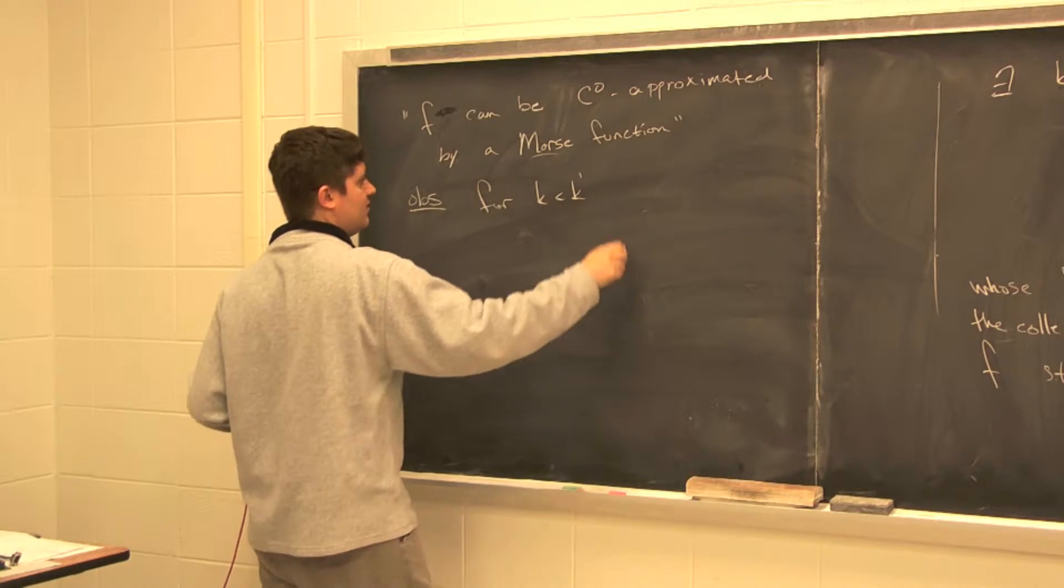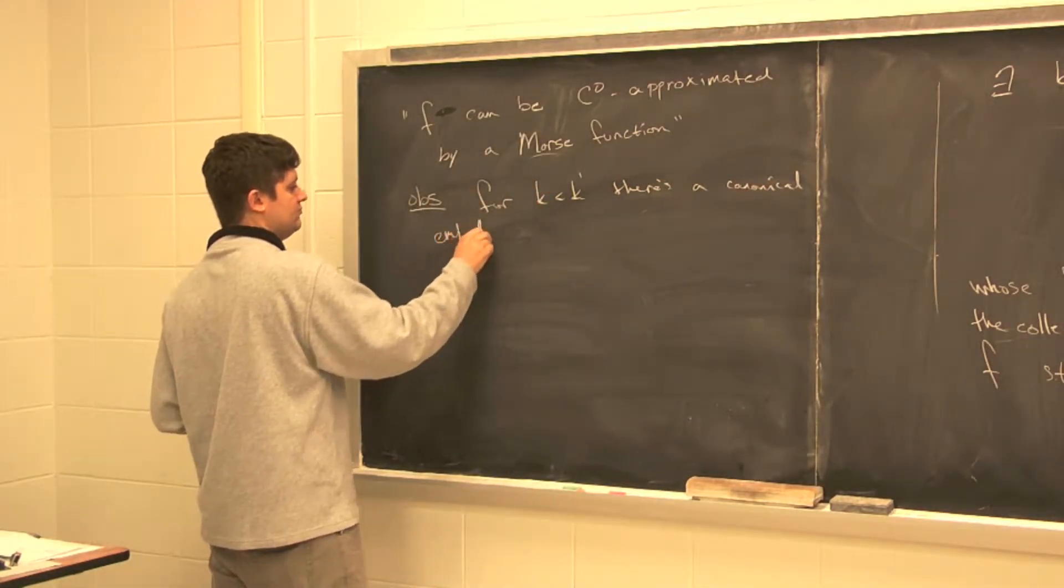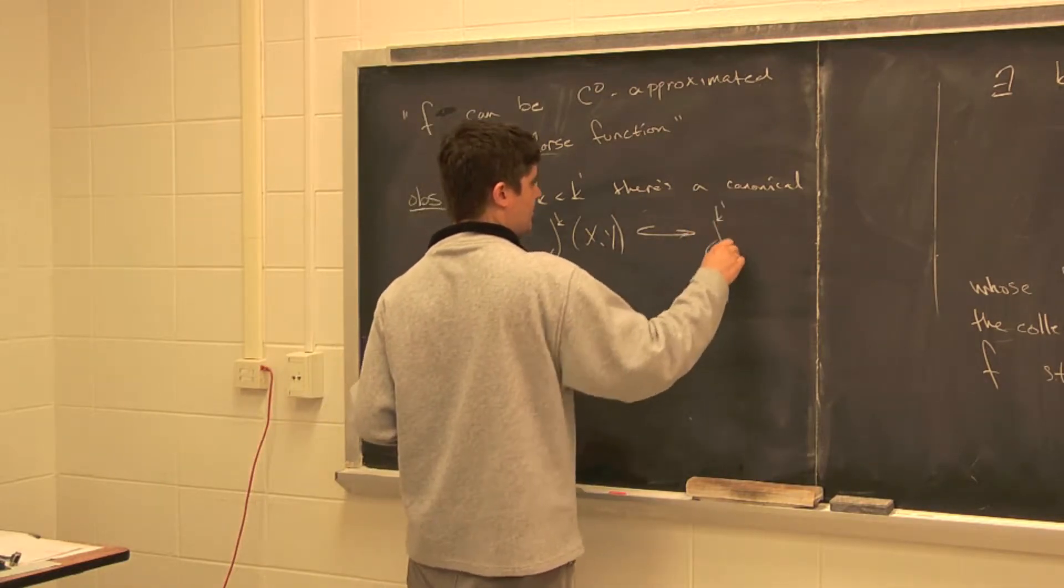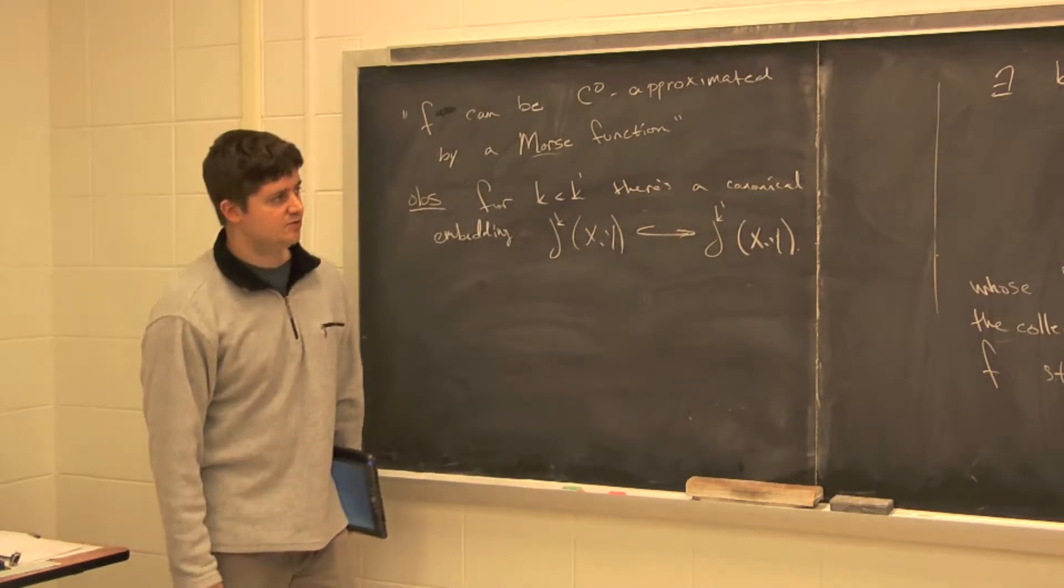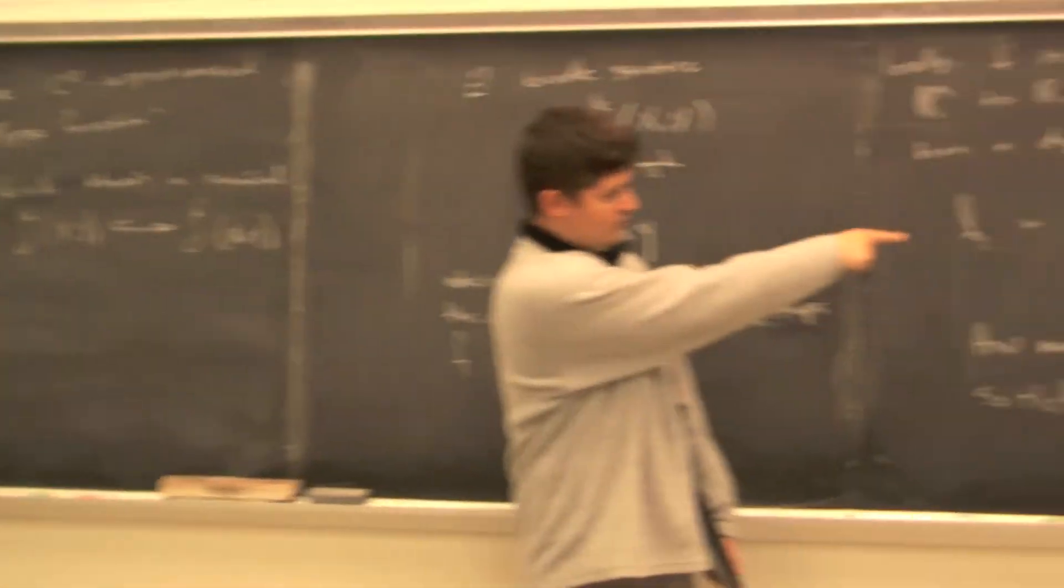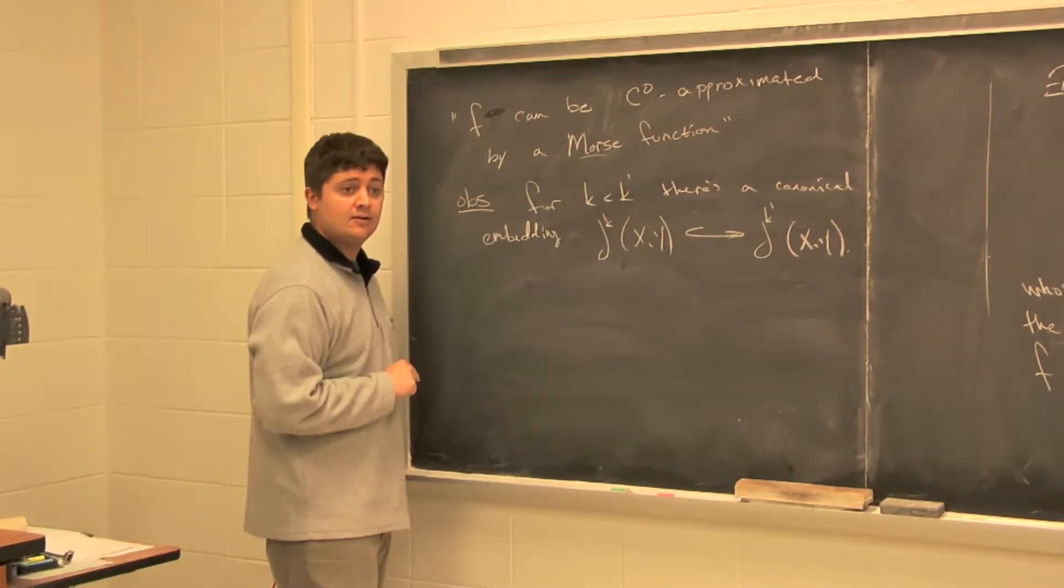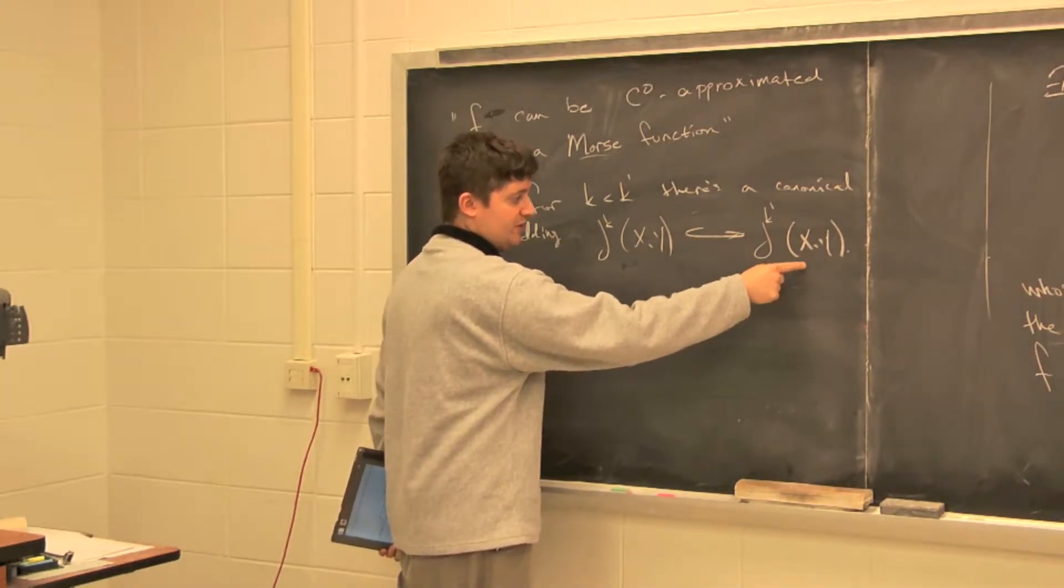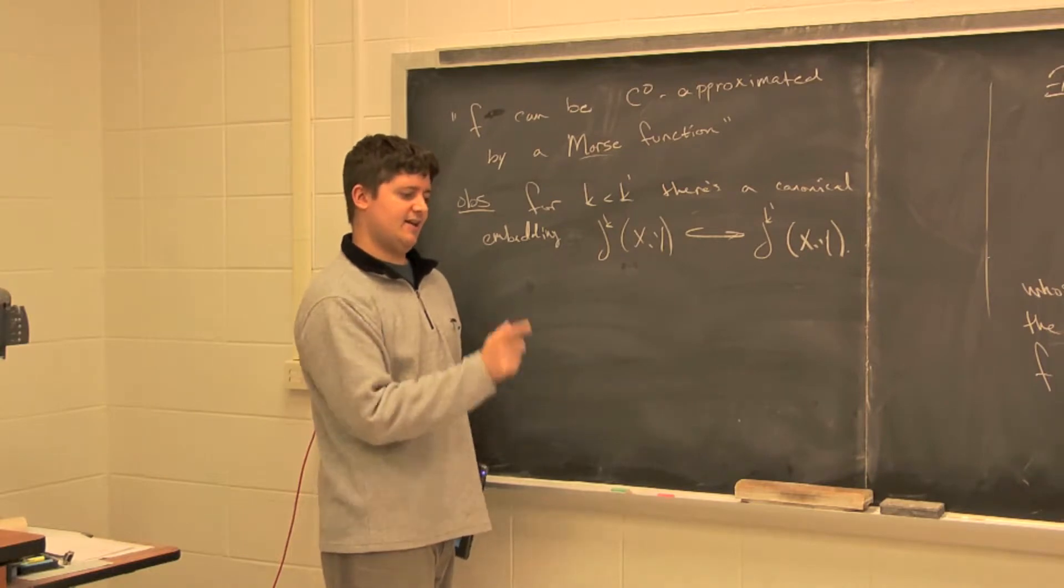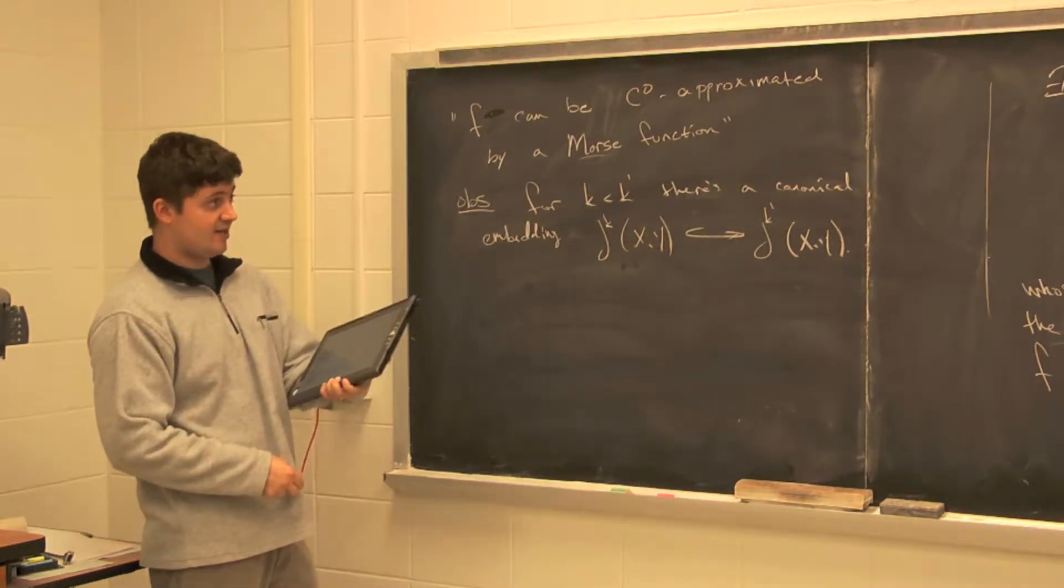J^k of X,Y into J^k' of X,Y. How would you get that? This is just the degree k part of this higher degree Taylor polynomial. Given by appending zeros. And then there's also a canonical projection in the other way. There's a bundle structure from here to here.